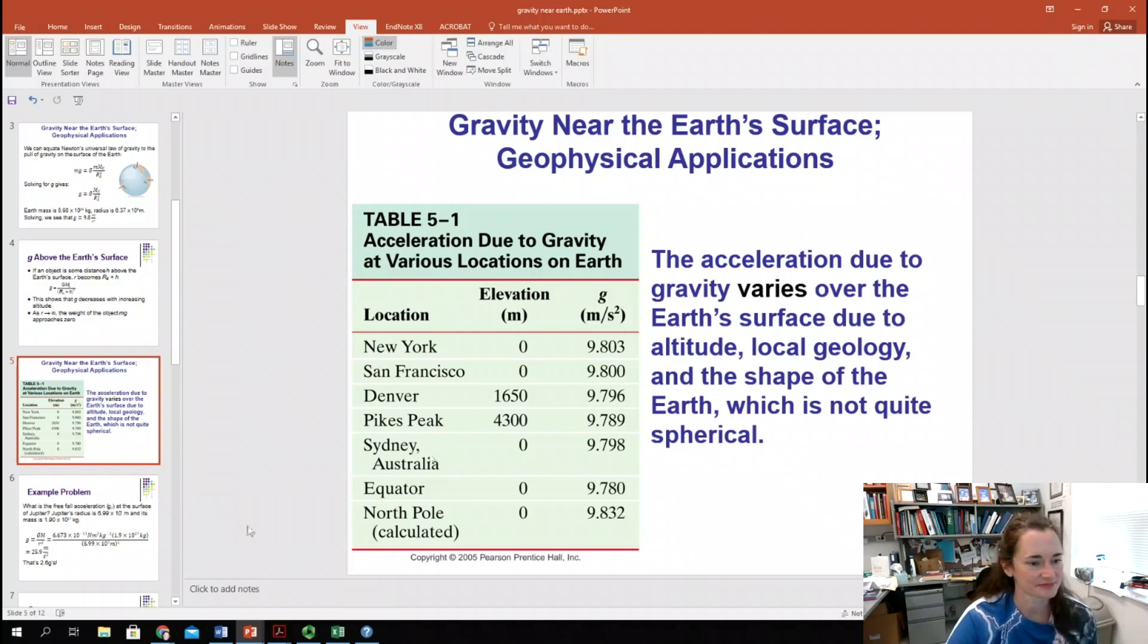All right. Oh, by the way, they measured this. One of the things that they noticed is that it changed the period of pendulum clocks. That was one of the first things that they noticed. Because the period of a pendulum clock is equal to 2 pi times the square root of L over G, where G is the acceleration due to gravity. So your pendulum clock actually gets off a little bit if you change altitude.